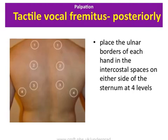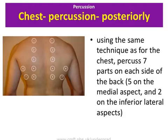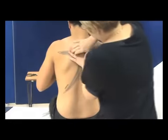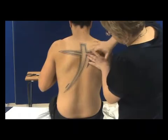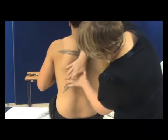Tactile vocal fremitus is affected by conditions in the same way as breath sounds are. Therefore, as before, you should expect vesicular breathing over areas of normal tactile vocal fremitus and decreased breath sounds over areas of decreased tactile vocal fremitus. Now percuss the back of the chest on either side of the spine, listening for whether the percussion note is normal, dull, or stony dull. Do not percuss near the midline as this produces a dull note from the solid structures of the thoracic spine and paravertebral musculature.